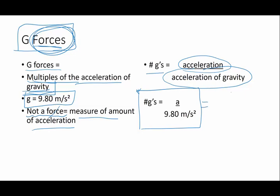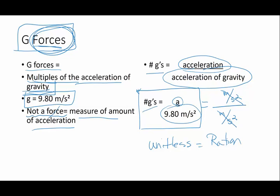Now, acceleration is going to be in meters per second squared. Acceleration of gravity is meters per second squared. So, what units are on g's? No units. G's is a unitless number. And, the reason is because it is a ratio. It is a comparison between rate of acceleration and the acceleration of gravity. G's is the total descriptor.